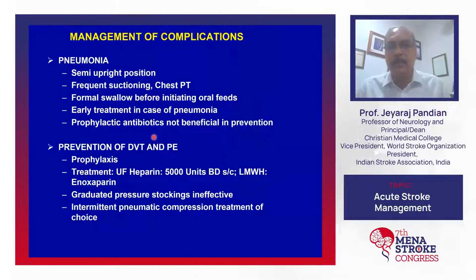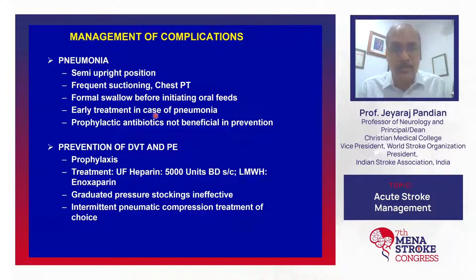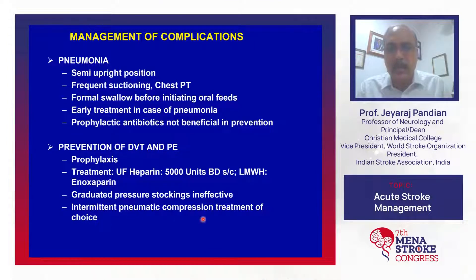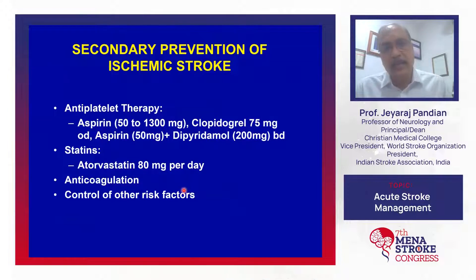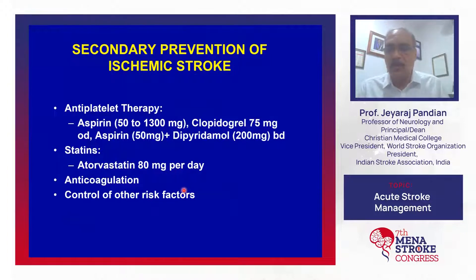Other complications: pneumonia can be prevented by keeping patients semi-upright, frequent suctioning, chest physiotherapy, and formal swallow assessment before feeding. For prevention of DVT and pulmonary embolism, use unfractionated or low molecular weight heparin; intermittent pneumatic compression is the treatment of choice; graduated compression stockings are ineffective. For secondary prevention of ischemic stroke within 48 hours, start aspirin; other options include clopidogrel or aspirin-dipyridamole. If lipids are deranged, start atorvastatin 80 mg per day. Anticoagulation is needed for patients with atrial fibrillation.